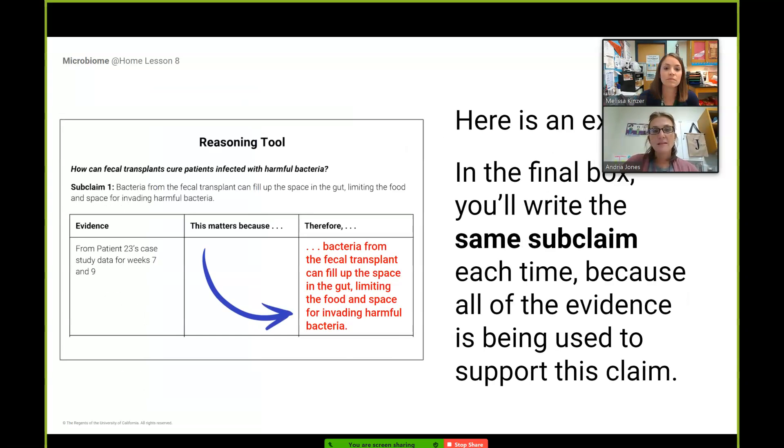The last part is the therefore. When you're starting this, we're always going to start with our evidence and actually with the therefore, because the therefore is just reiterating what the subclaim is. For example, on the patient 23 case study data from week 7, we're going to skip the why right now. Therefore bacteria from the fecal transplant can fill up the space in the gut limiting food and space for invading harmful bacteria. Now we skipped a part. We want to go back and backfill this matters because this is where we put in that why.